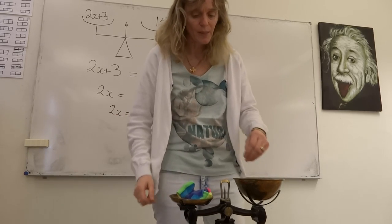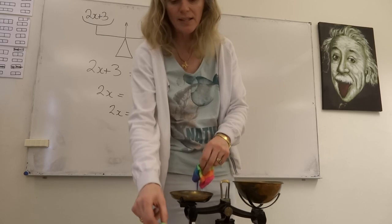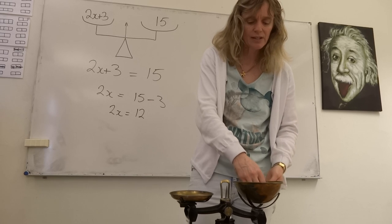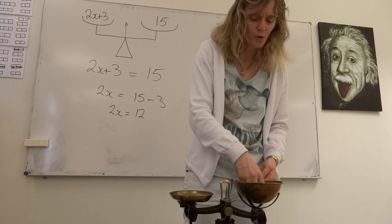Okay, so now if two lots of X equals 12, what would one lot of X be? Well, let's have a look. Here's one lot of X and here's another lot of X, and let's just split these coins up into two piles.